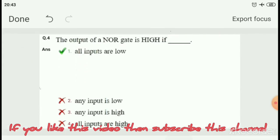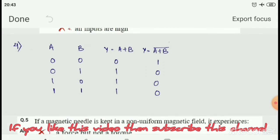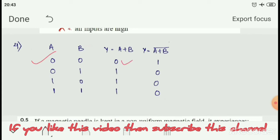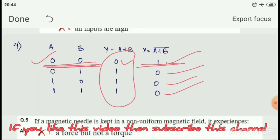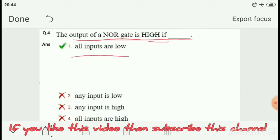Question number 4: The output of a NOR gate is high if? First, we look at the OR gate. When both inputs are low, the OR gate output is also low. For a NOR gate, if the OR gate values are 0, 1, 1, 1, then the NOR gate values become 1, 0, 0, 0. So the output is high when all inputs are low. The output of a NOR gate is high if all inputs are low. So option number 1 is correct.